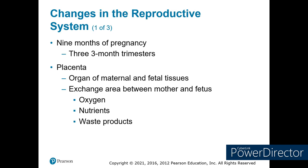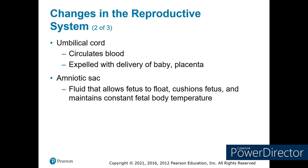The umbilical cord allows circulation and comes out with the baby and placenta at birth. To keep the fetus comfortable in the uterus, you have the amniotic sac — a cushioning fluid that allows the fetus to float inside the uterus and provides warmth and nutrition.